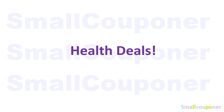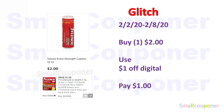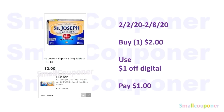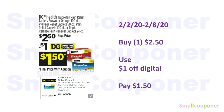Health deals. This is a glitch deal for the Tylenol 10-count — the $1 off is attaching to this product. You'll buy one for $2, use the $1 off digital, and pay $1. The St. Joseph Aspirin 36-count is $2; use the $1 off digital and pay $1. The DG Health Ibuprofen is $2.50; use the $1 off digital and pay $1.50.